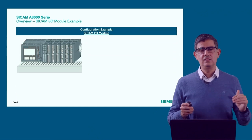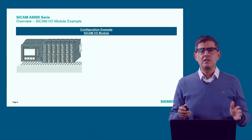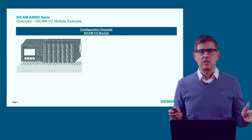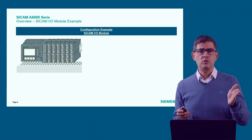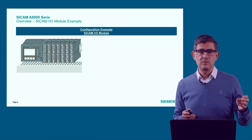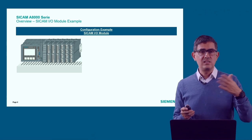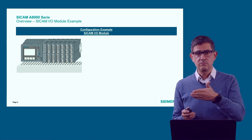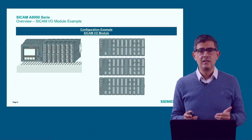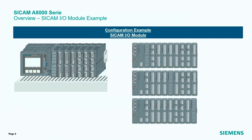These modules can be installed anywhere in the RTU as long as they are to the right of the power supply. In the CP8000, which has the built-in power supply, they can be connected directly to the right or further to the left. In the other RTUs they can be connected directly attached to the power supply, or in the middle of the input and output modules, or completely to the right — no problem.